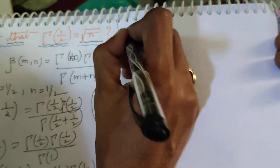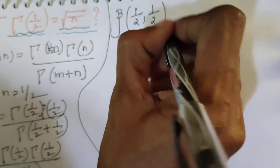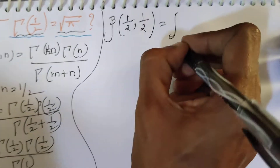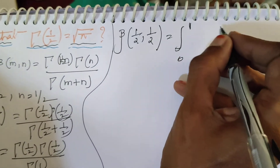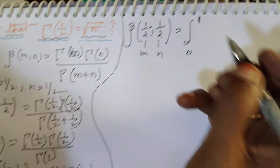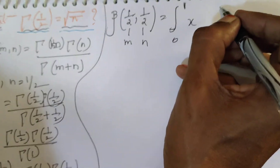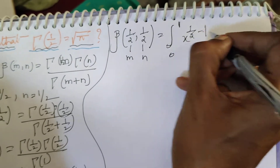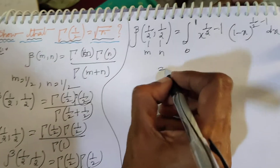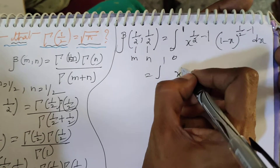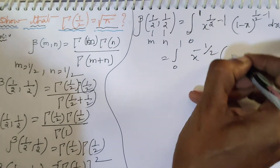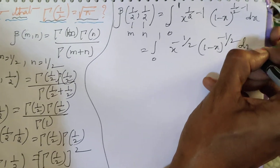Now let us evaluate Beta(1/2, 1/2) using the definition of the Beta function: integral from 0 to 1 of x^(m−1) times (1−x)^(n−1) dx. With m = n = 1/2, this becomes the integral from 0 to 1 of x^(−1/2) times (1−x)^(−1/2) dx.